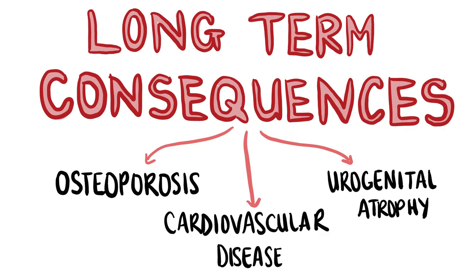Let's mention a few long-term consequences of the menopause. The first is osteoporosis, which occurs because oestrogen reduces osteoclast activity to protect bone mass and density — after the menopause, women are in an oestrogen deficient state. The second is cardiovascular disease, for example MI and stroke, because oestrogen reduces LDL and increases HDL levels. A third is urogenital atrophy, which causes urinary symptoms such as frequency, urgency, incontinence and recurrent UTIs.